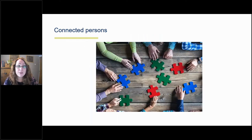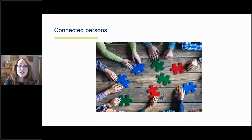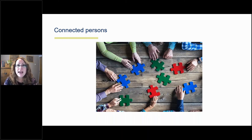So what do we mean by connected persons? The full definition is set out in the Charities Act. There are two key provisions: Section 118, which relates to charity land disposals, and Section 188, which relates to contracts for services and goods. Although those definitions aren't strictly applicable to all situations where there might be conflicts, the Commission does expect you to apply the understood meaning of connected persons in any other types of situations where there might be a personal benefit.